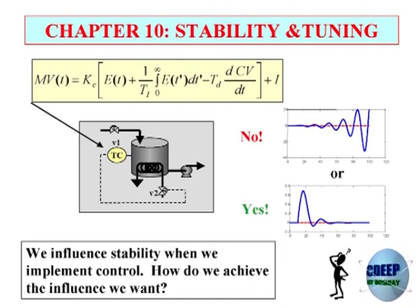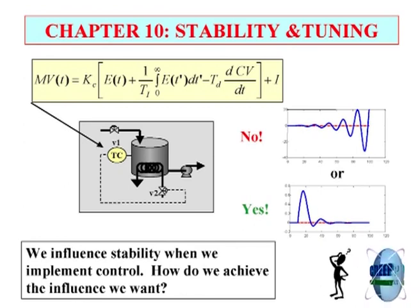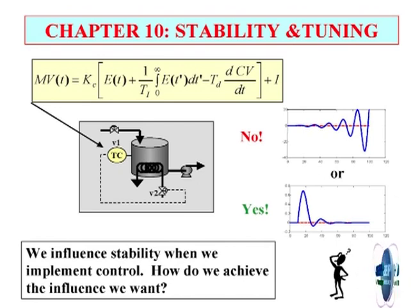This is our PID controller. I am again taking the example of a single heated tank, very similar to our interactive learning module, and we have put a temperature controller here. If the temperature controller is a PID controller, this is the equation. As you have seen in one of the interactive modules, if the gain is higher than some particular value — I do not remember, it was 9 or 11 or something — then we had oscillations which diverged; otherwise it was good.